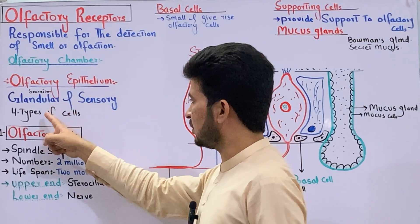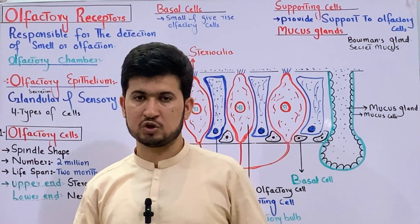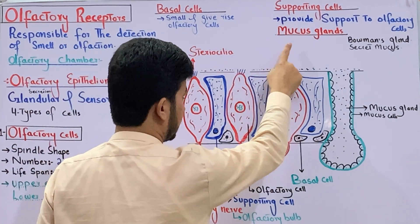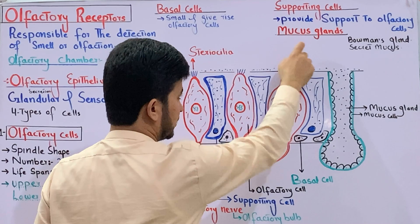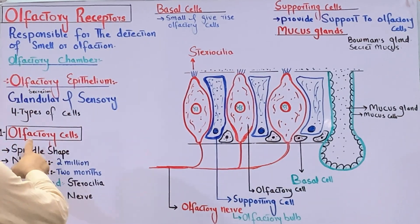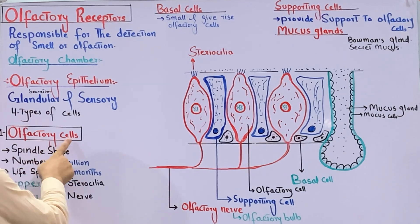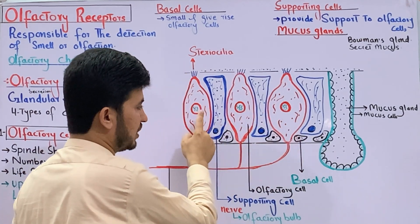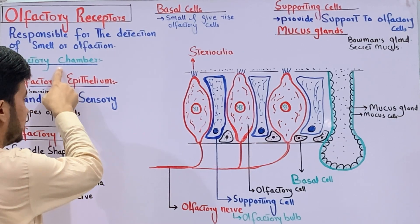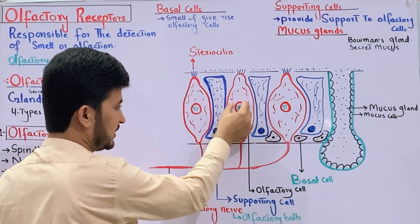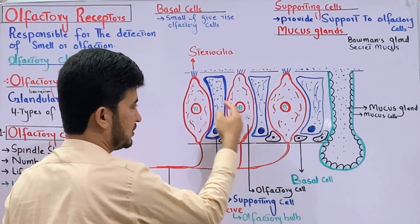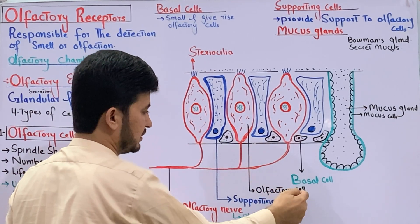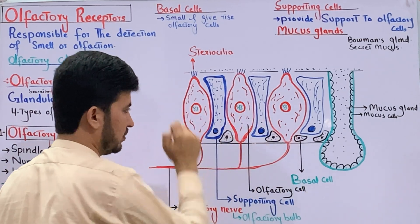In the olfactory epithelium, four types of cells are present. The olfactory epithelium has four kinds of cells: olfactory cells, basal cells, supporting cells, and mucous gland cells. The first type is olfactory cells. Olfactory cells are spindle-shaped and are present in the olfactory epithelium.